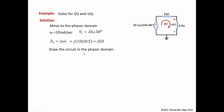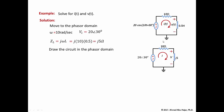Now we draw the circuit in the phasor domain. It is the same circuit with a few changes: the voltage source becomes its phasor value of 20∠30°, representing the magnitude and phase of the cosine. The resistor keeps the same impedance value, and the inductor is replaced by its impedance j5 ohms.